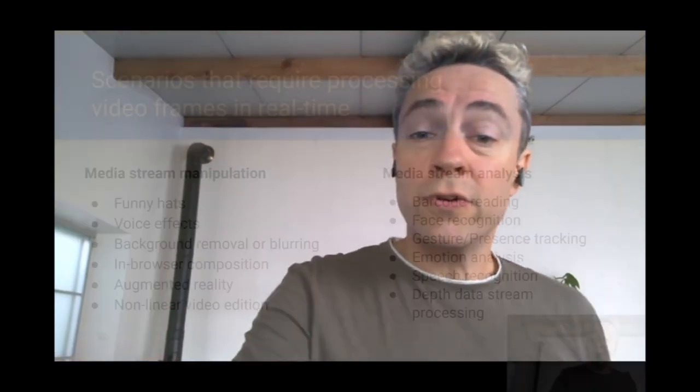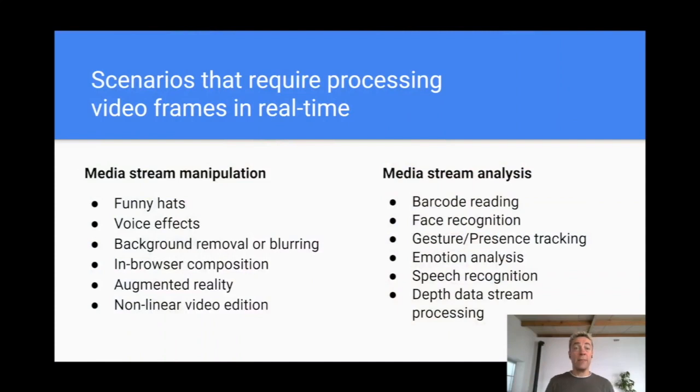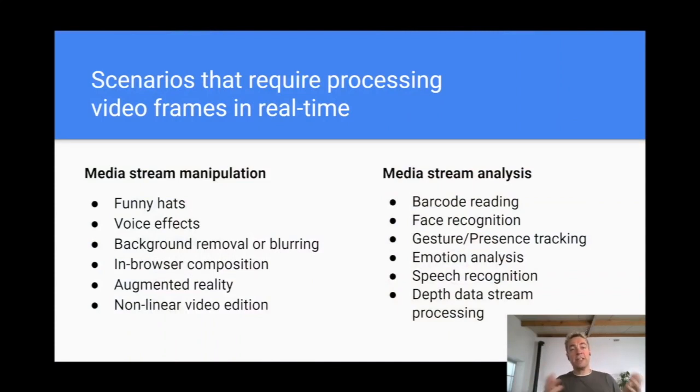In parallel, computing capabilities are exploding on the web, with technologies such as WebAssembly, WebGPU, WebNN — and JavaScript itself is far from being slow. New requests have emerged as a result. They boil down to: how can these technologies be mixed together to process video frames in real time?